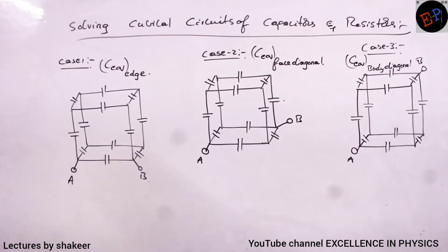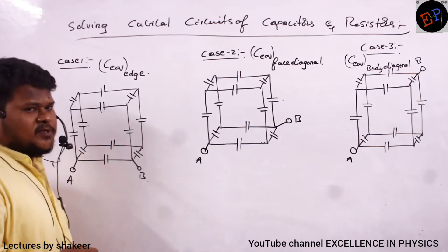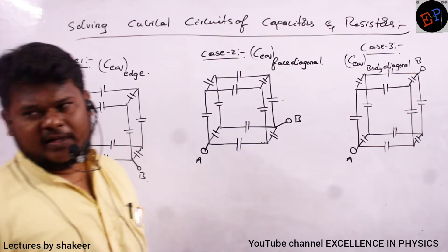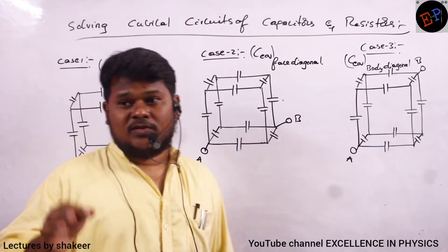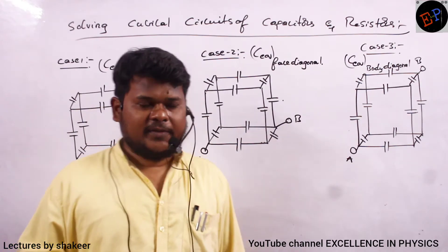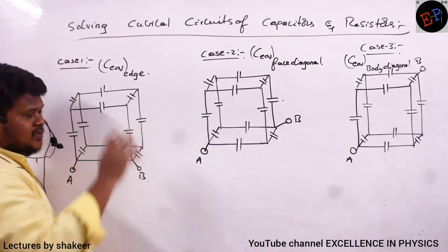So see my next very important concept: solving circuits in the shapes of cubes. So cube will have totally how many edges? 12, 12 edges will be there. And on each edge, either a resistor or a capacitor can be placed.